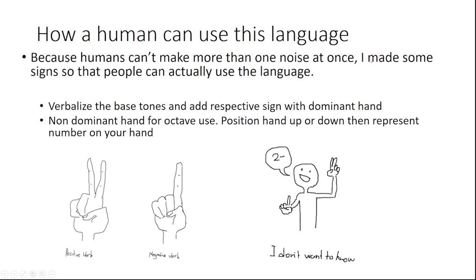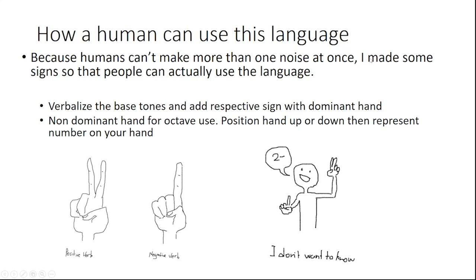And there you have it. How can humans use this language? Because humans can't make more than one noise at once, I made some signs so people can actually use the language. It is possible to use. You verbalize the base tones and add the respective sign with your dominant hand. You hold up 2 while saying the base tone to make it a positive verb, and then a 1 for a negative verb.